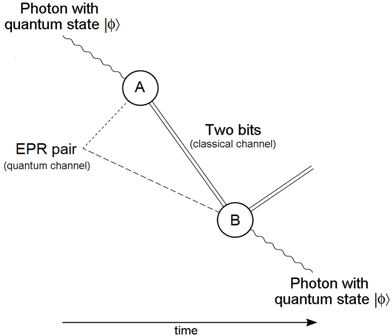Quantum networks form an important element of quantum computing and quantum communication systems. Quantum networks facilitate the transmission of information in the form of quantum bits, also called qubits, between physically separated quantum processors. A quantum processor is a small quantum computer able to perform quantum logic gates on a certain number of qubits.